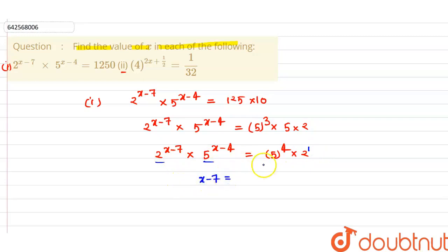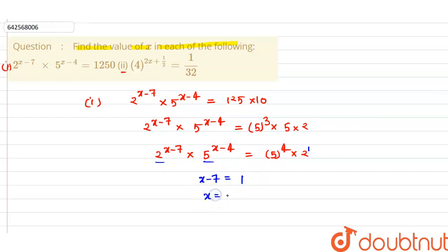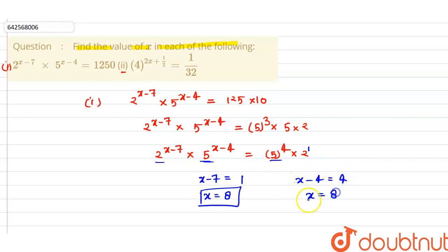Now comparing the powers of the same bases: for base 2, we have 2^(x-7) = 2^1, so x minus 7 equals 1, giving x equals 8. For base 5, we have 5^(x-4) = 5^4, so x minus 4 equals 4, giving x equals 8. The value of x is 8.